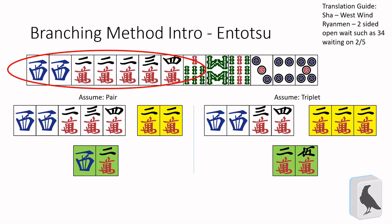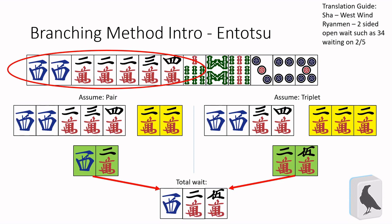In total, when we add all this up, we can conclude that the shape waits on sha, two, and five-mon. But this one is pretty basic. Let's take a look at a more complicated example.